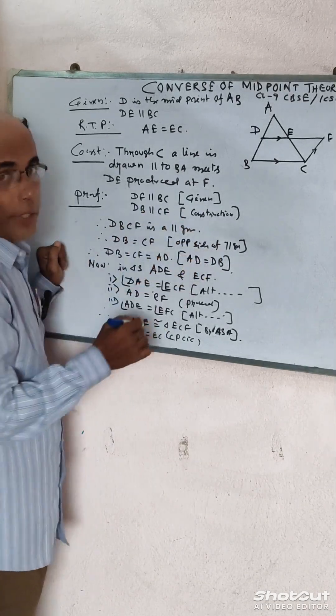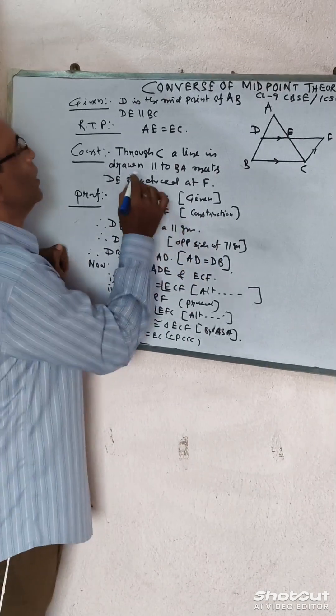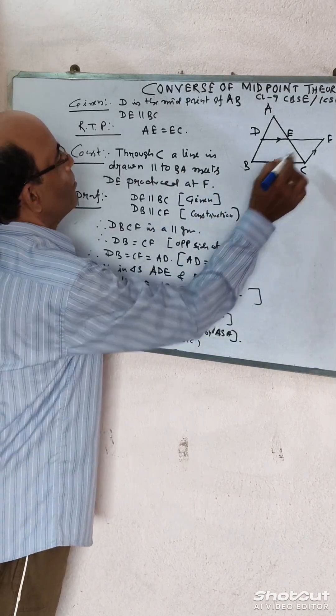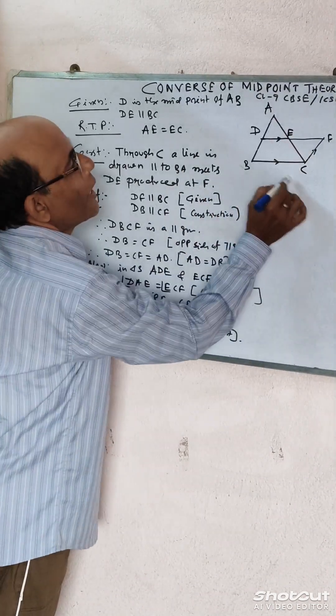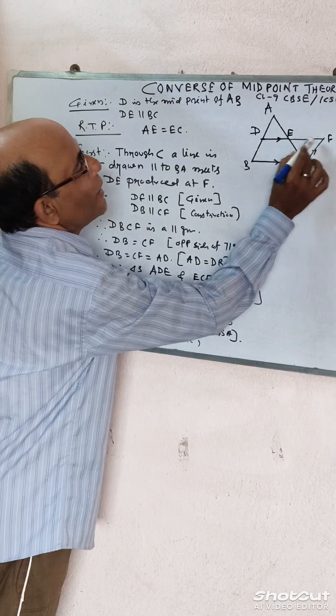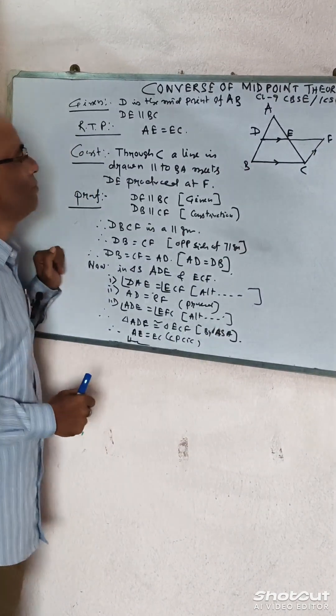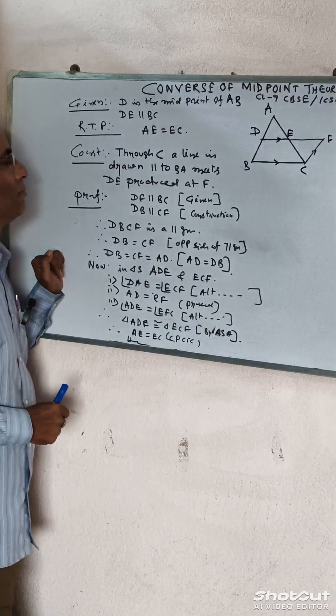You have to construct a line through C parallel to BA, which means DE produced at F. Now prove.